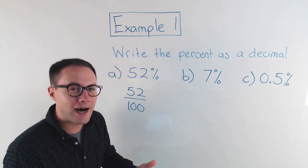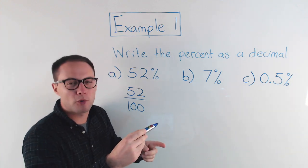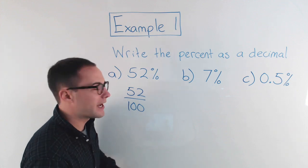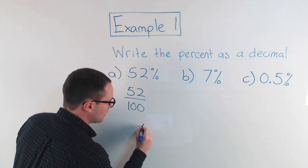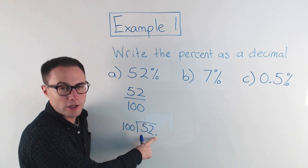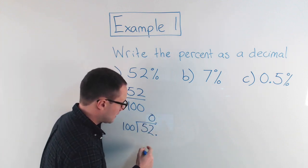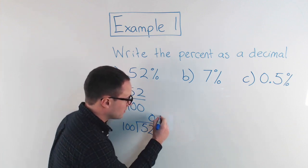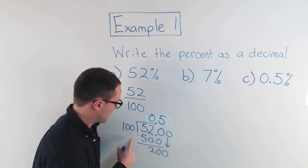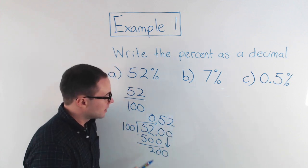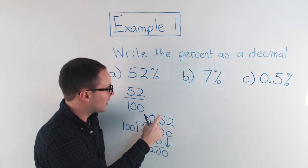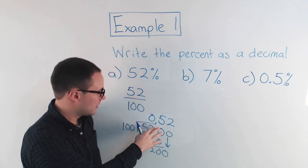Hopefully you know the shortcut to divide by multiples of 10: all we do is move the decimal point to the left. If I divide by 10, I move it once to the left; divide by 100, I move it twice; a thousand, three times, and so on. If you don't believe me, we can actually do this — 52 divided by 100. There's no decimal point, but I can put it here. 100 into 52 goes zero times; 100 into 520 goes five times, that gives me 500, subtract I get 20; 100 into 200 is two times exactly. So all I did was go from 52 divided by 100 to 0.52 — I just moved the decimal point twice to the left and got 0.52.